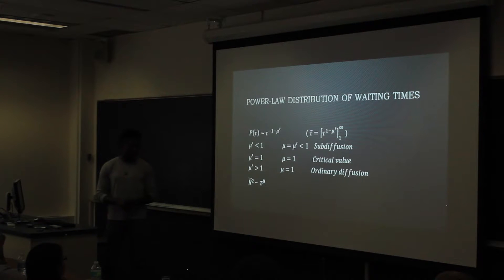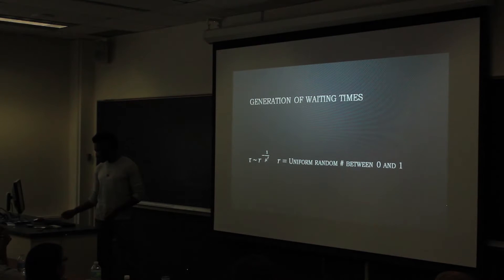And anything that mu prime is greater than 1 is ordinary diffusion, which won't have these waiting times. And mu prime equals 1 is actually a critical value which causes the average tau, the integral, to diverge. So we have to go through some special techniques to simulate mu equals 1.